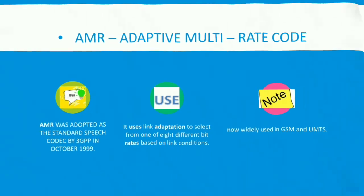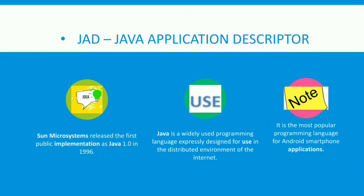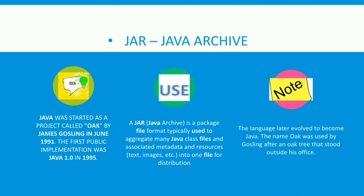The fourth topic is JAD — Java Application Descriptor. Sun Microsystems released the first public implementation as Java 1.0 in 1996. Java is a widely used programming language expressly designed for use in the distributed environment of the internet, and it is the most popular programming language for Android smartphone applications.